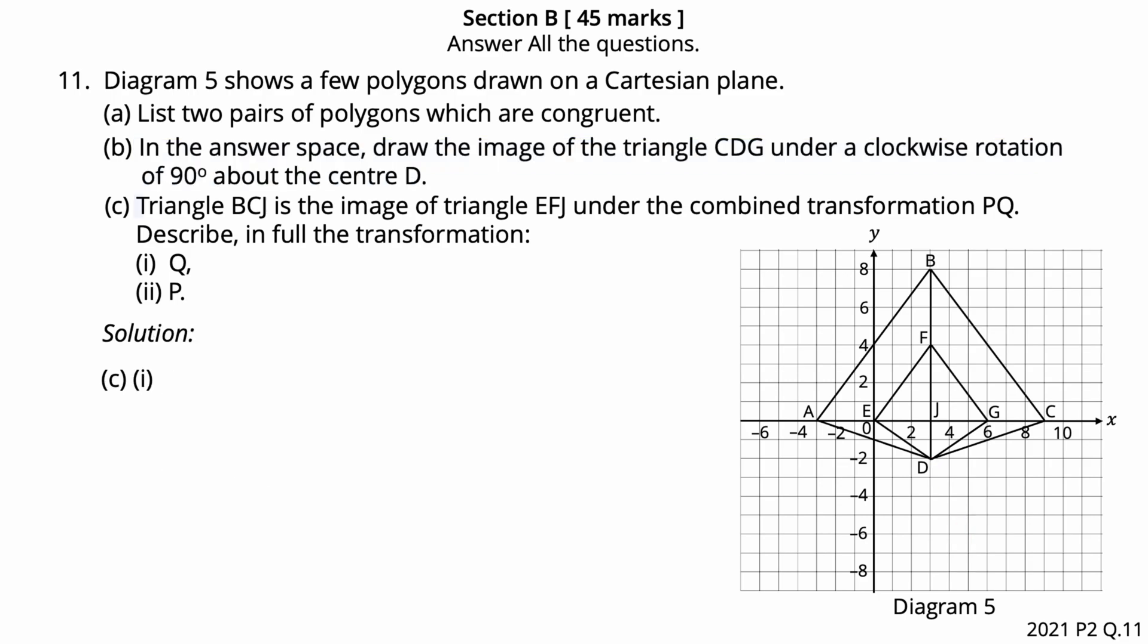Question 11c. Triangle BCJ is the image of triangle EFJ under the combined transformation PQ. Describe in full the transformation Q. Transformations can be combined by doing one transformation and then another. The combined transformation in the diagram is a reflection followed by an enlargement. Triangle GFJ is the image of triangle EFJ under a reflection on the line X equals 3. Reflection is when we flip a figure over a line. So, we describe that Q is a reflection on the line X equals 3.